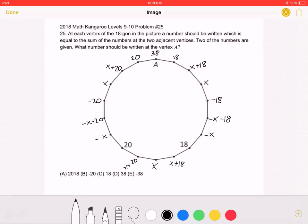This is the 2018 Math Kangaroo Levels 9-10, problem number 25. At each vertex of the 18-gon in the picture, a number should be written which is equal to the sum of the numbers at the two adjacent vertices. Two of the numbers are given. What number should be written at the vertex A?